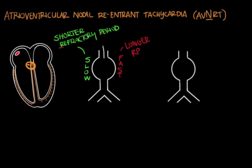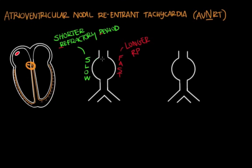Normally, a signal splits and rushes down the fast pathway, reaches the final common pathway, and spreads to the ventricles. Meanwhile, it slowly travels down the slow pathway. After the impulse transmits through the fast pathway, the fast pathway enters its refractory period. By the time the slow pathway signal reaches the final common pathway, the fast pathway is still refractory, so that signal terminates. The slow pathway then enters its own shorter refractory period, recovers first, followed by recovery of the fast pathway — and both pathways are ready for the next impulse.